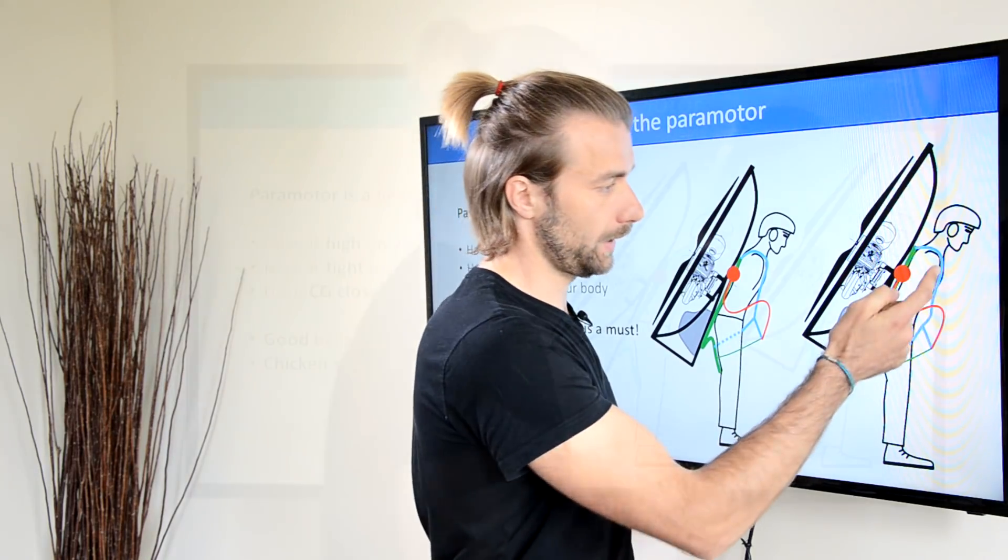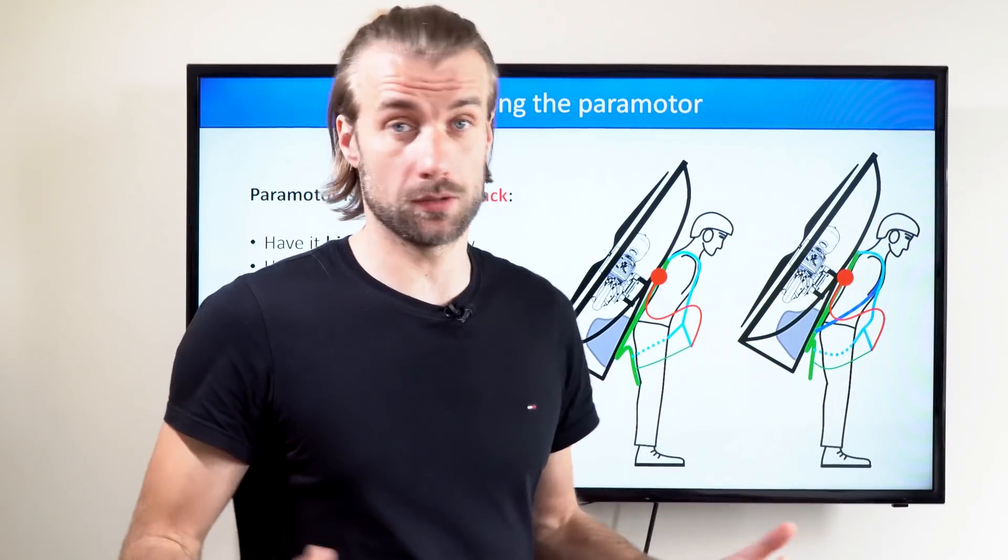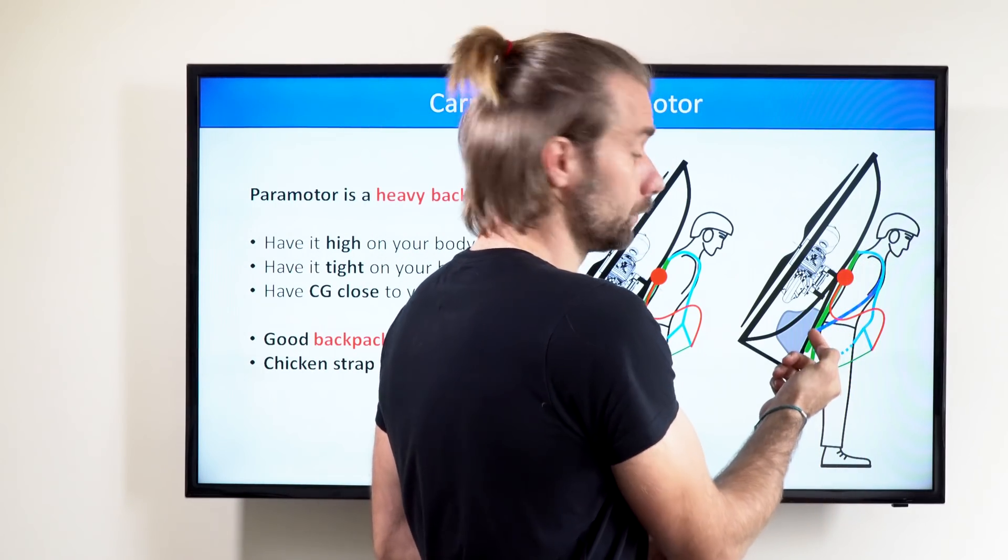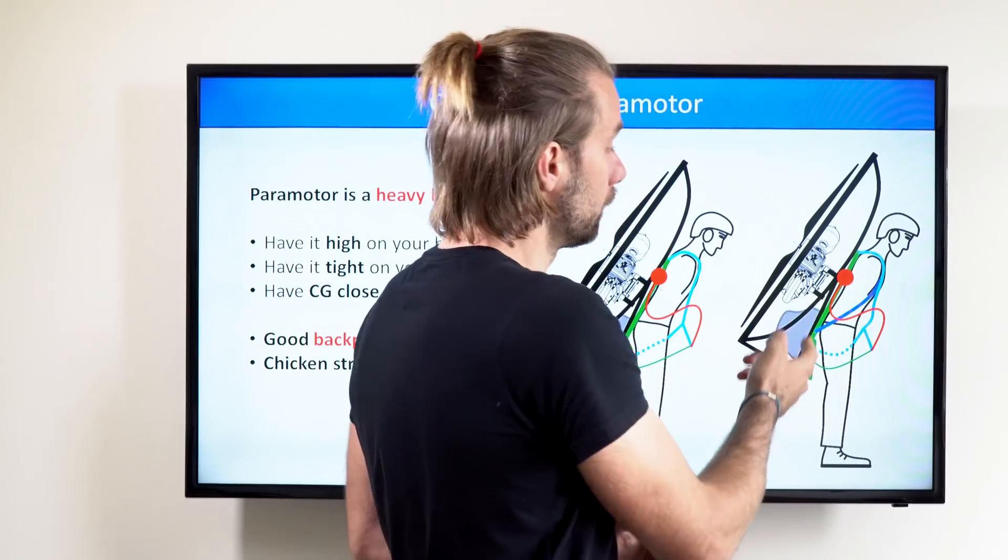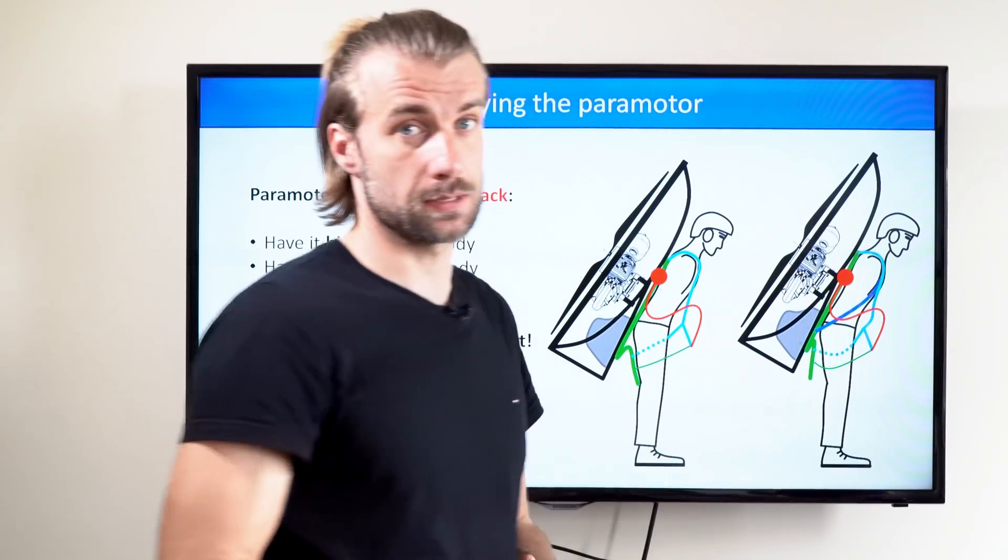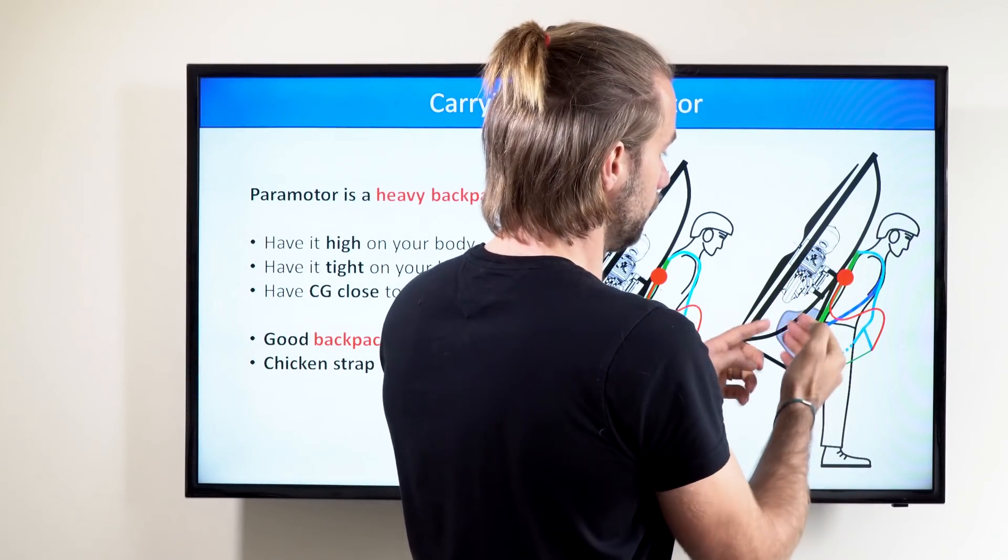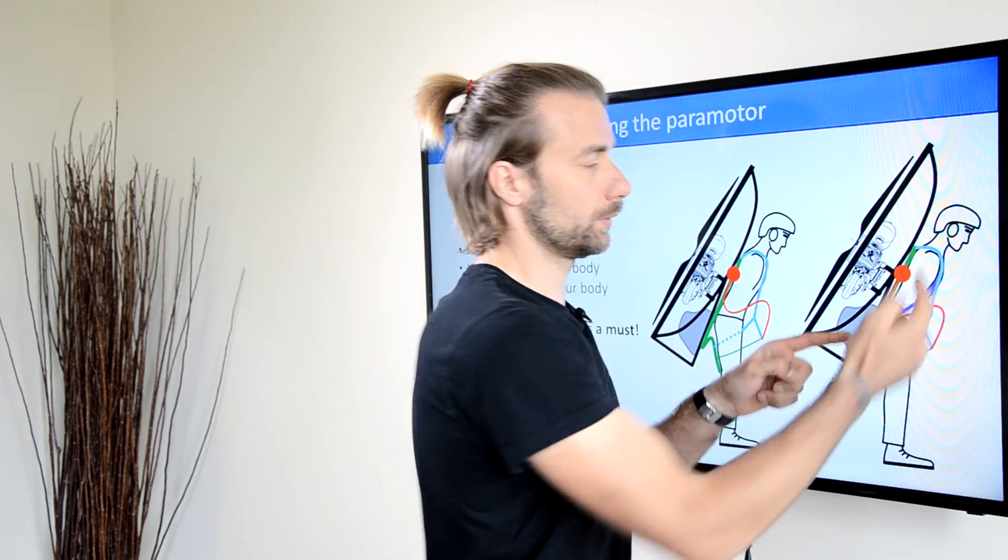A much better solution commonly incorporated into paramotors is adding a backpack strap. This is simply a strap just like on any other backpack that goes from your shoulder to the bottom of the main frame, so not to the harness but to the main frame itself. This means the weight of the frame, engine, and fuel tank is hanging on this little loop around your shoulders for more comfortable walking or running.